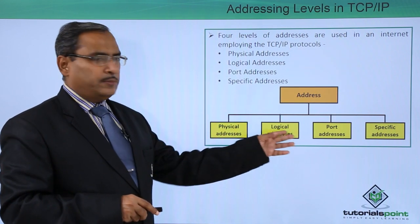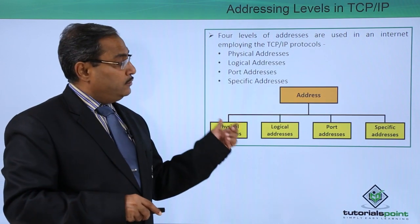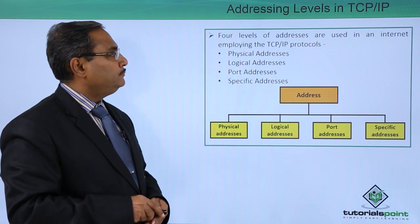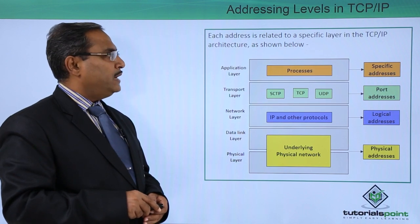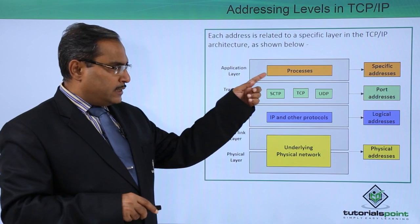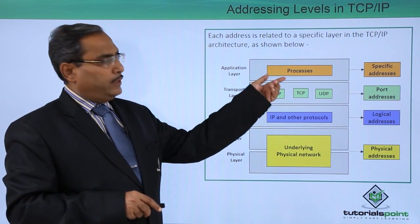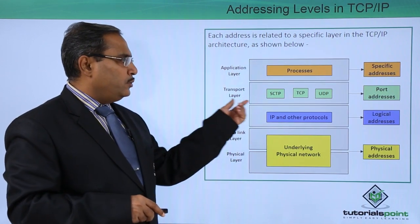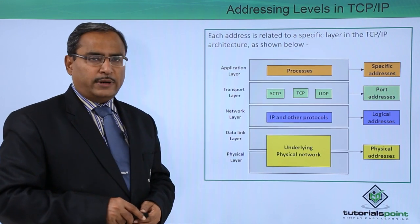All these addresses belong to respective categories, and we shall check in which layer they are supposed to be applied or have a role to play. Each address is related to a specific layer in the TCP/IP architecture. In case of the application layer, we have specific addresses, and the processes executing there might require these specific addresses. In the transport layer, HTTP, TCP, or UDP will be requiring the port addresses.